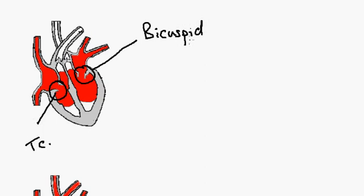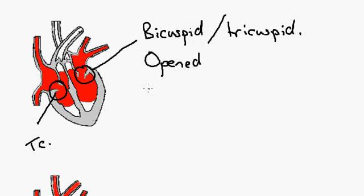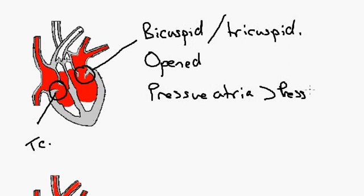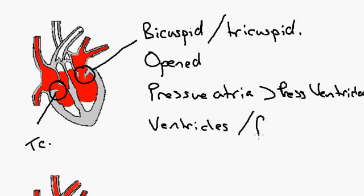In this diagram, the valves here and here have opened. So this is the bicuspid and over here we have the tricuspid, and they have opened. And the reason for this is that the pressure in the atria is greater than the pressure in the ventricles. So that causes the opening of these two valves here. The ventricles fill with blood.